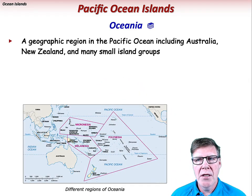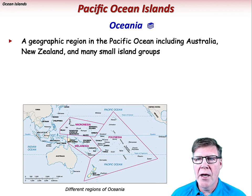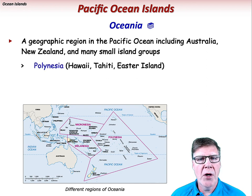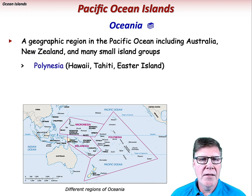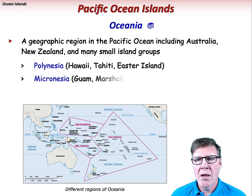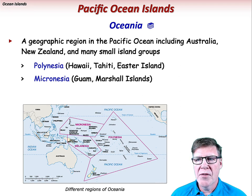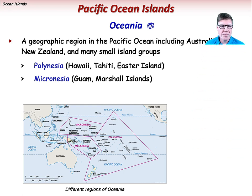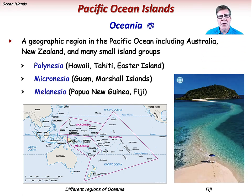Oceania is a geographic region in the Pacific Ocean that includes Australia, New Zealand, and many smaller island groups. The largest area is Polynesia, which includes Hawaii, Samoa, Tahiti, Easter Island, etc. Micronesia stretches from southwest of Hawaii towards the Philippines and contains the Marshall Islands, Guam, and others. Melanesia is a third area that includes Papua New Guinea, the Solomon Islands, Fiji, etc.